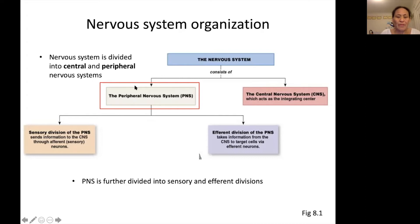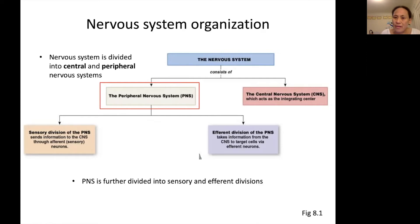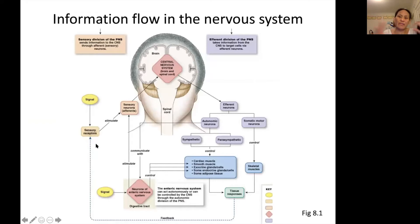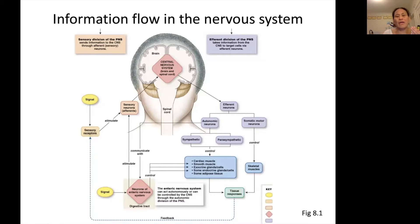The peripheral nervous system can be further divided into two divisions: the sensory division and the efferent division. Moving to the next slide, which shows the overall organization of the nervous system — there are lots of boxes showing different things, but what I want to show you is how the sensory and efferent divisions fit into the overall organization and scheme of the nervous system.